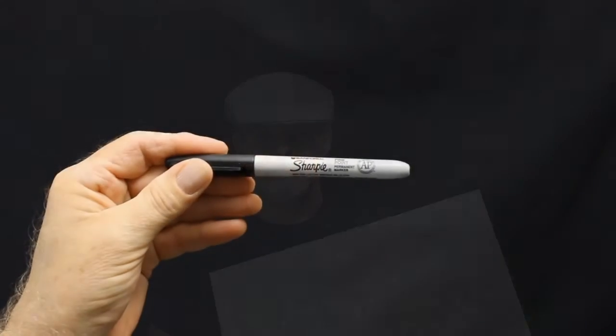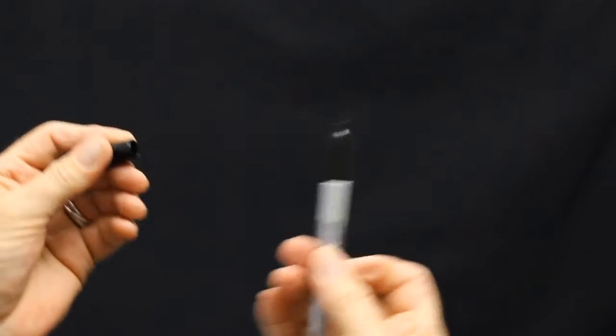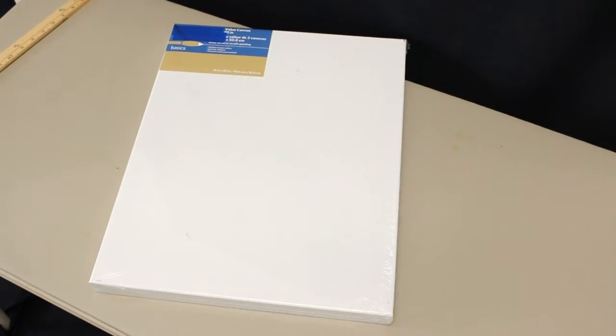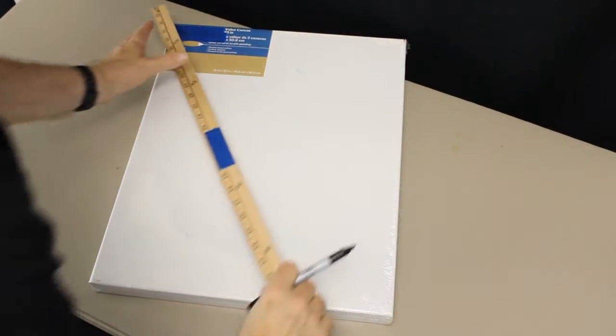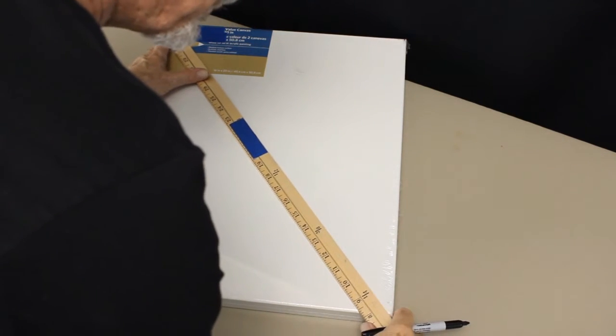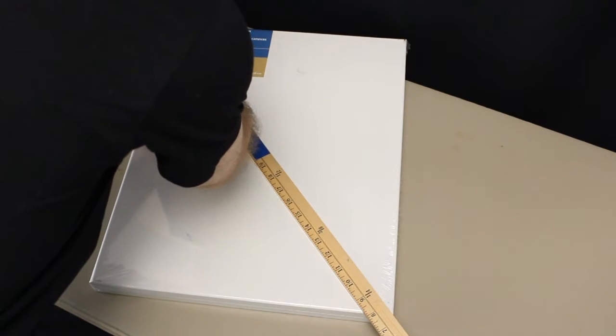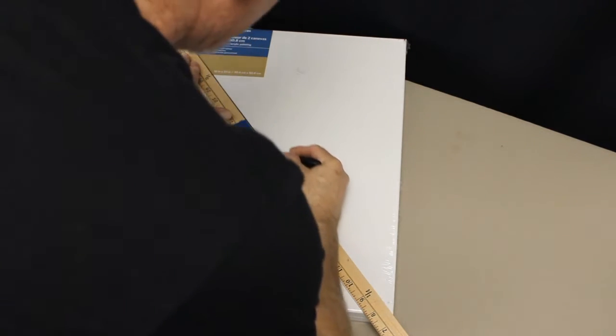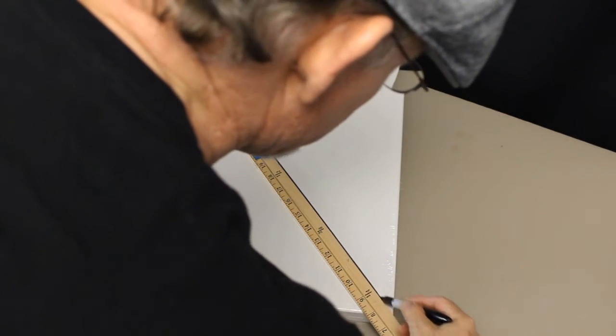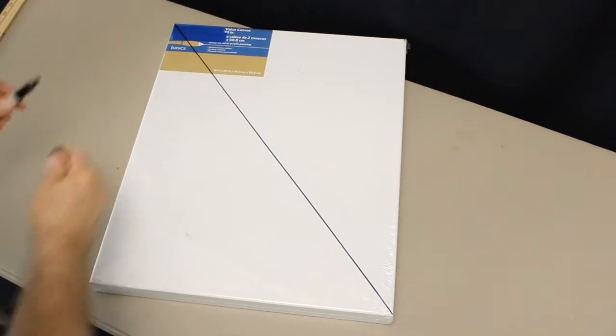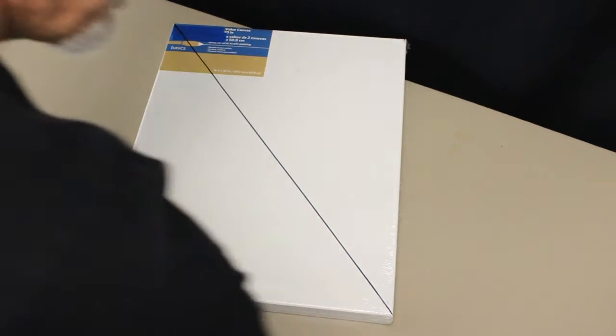I'm going to be using this Sharpie marker in order for my lines to stand out in this tutorial. Don't use a marker on your canvas. Draw on your canvas with a 4-H or a harder graphite pencil. Mark lightly and use the edge of the graphite, not the point. To begin with, I'm going to draw a diagonal line from corner to corner on my canvas. My canvas still has the plastic cover placed on it by the manufacturer. I'm using my marker directly on this plastic cover.